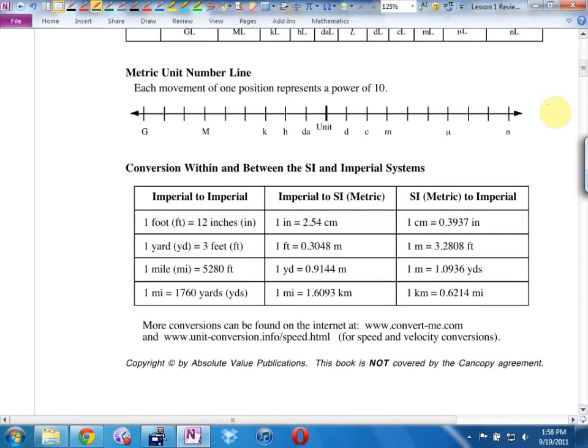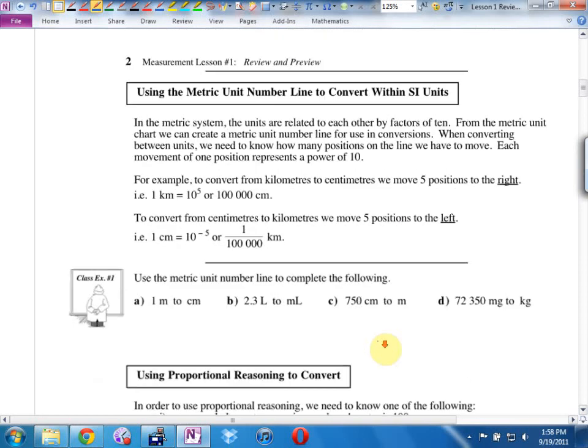Then last year, I think on your provincial, you were given a conversion chart. Feet to inches, inches to centimeters, centimeters to inches, whatever. Blah, blah, blah, blah, blah. It says, more conversions can be found online. Heck, there's an app for that. Turn the page. It says this. In the metric system, the units are related to each other by factors of 10. From the metric unit chart, we can create a metric unit number line for use in conversions. Let's just jump and let's do an example.